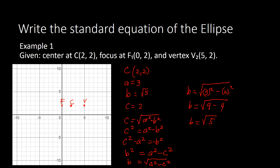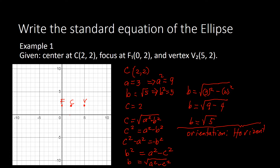Now what we need for the standard equation of our ellipse is A squared and B squared. So our A squared is equal to 9 and our B squared is equal to 5. Looking at the center and the vertex, from the center to the vertex we move horizontally, so we have the orientation of our ellipse as horizontal. Since we have horizontal orientation, our bigger value A must be under the variable X.